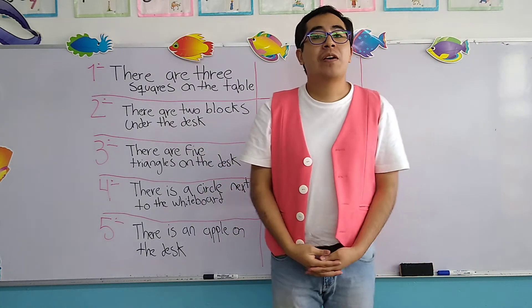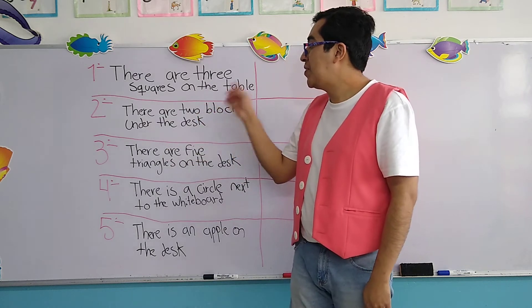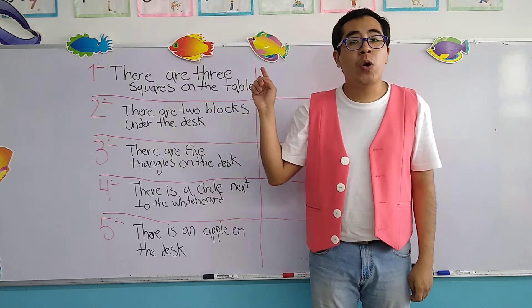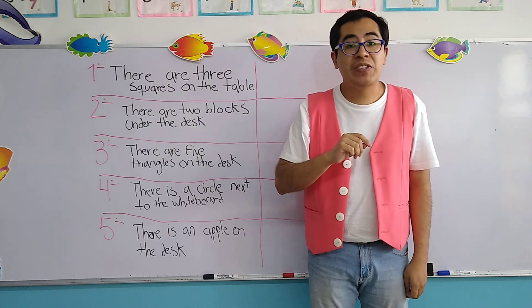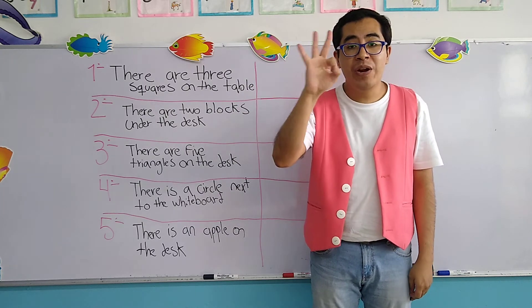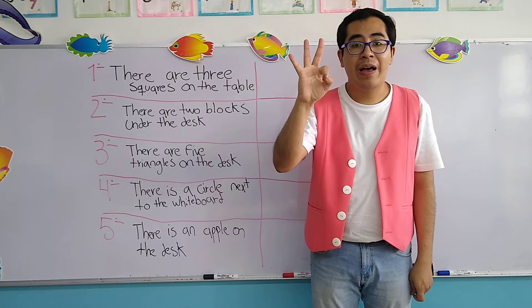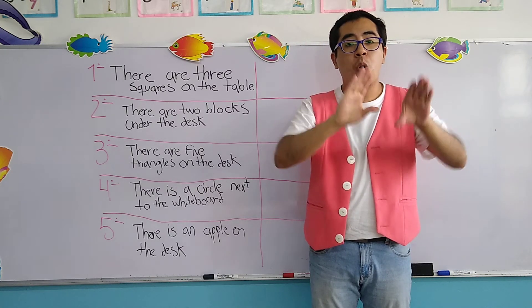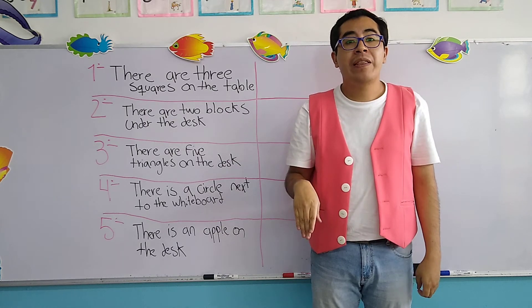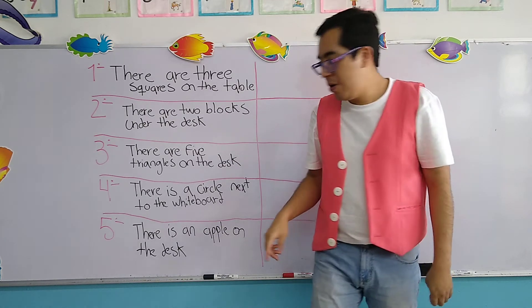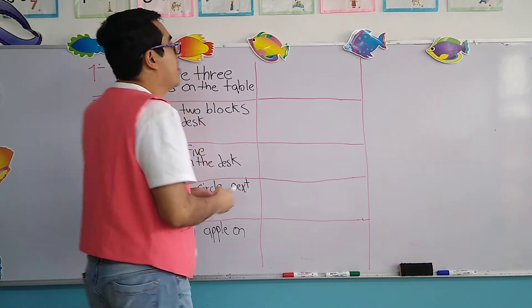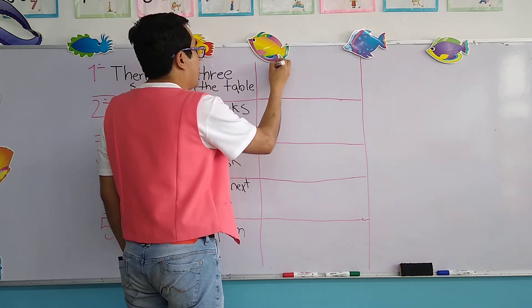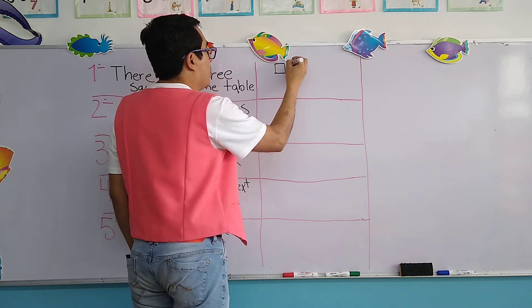Now, the first sentence of the exercise says, there are three squares on the table. Remember the prepositions of place, on, arriba, on the table. That means we have to draw three squares. Remember the squares are part of the geometric shapes.